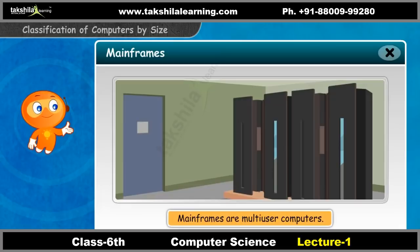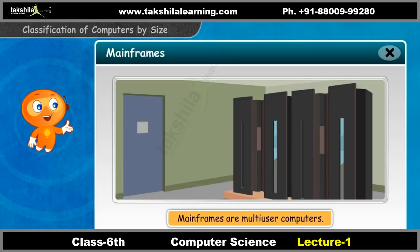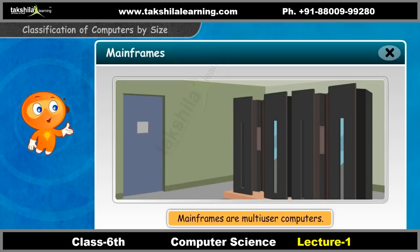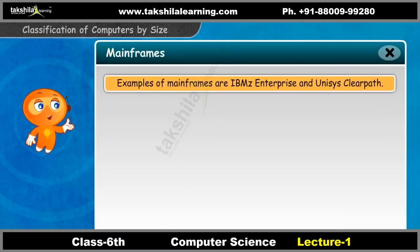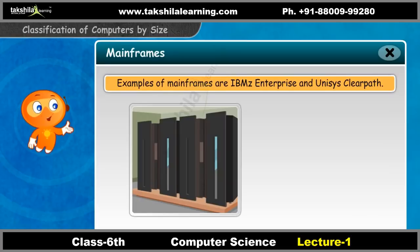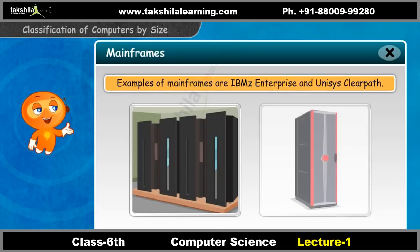Mainframes are multi-user computers. They perform bulk data processing in large organizations. They are large and expensive computers. Examples of mainframes are IBM Enterprise and Unisys ClearPath.